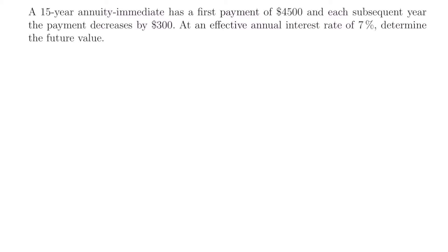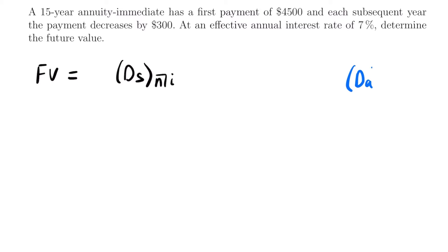We want to determine the future value, and that narrows down which formula we want to use. The future value is equal to the notation capital D, S, N bracket I. If you're not familiar with this notation but you are familiar with the present value for an arithmetic decreasing annuity immediate — that formula is capital D, A, N bracket I — you can just multiply that present value formula by (1 + i) to the power of N to get the future value.